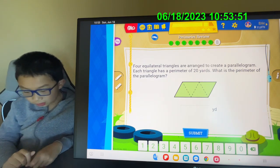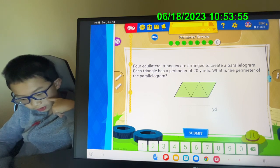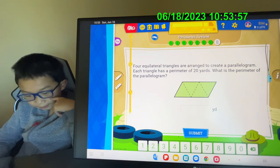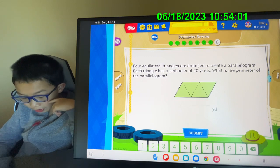What is this question? Four equilateral triangles are arranged to create a parallelogram. Each triangle has a perimeter of 20 yards. What is the perimeter of the parallelogram?